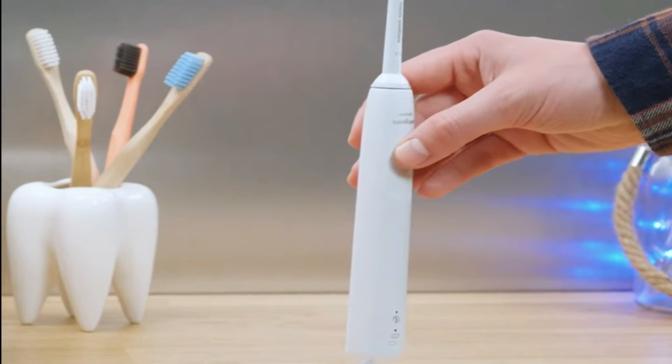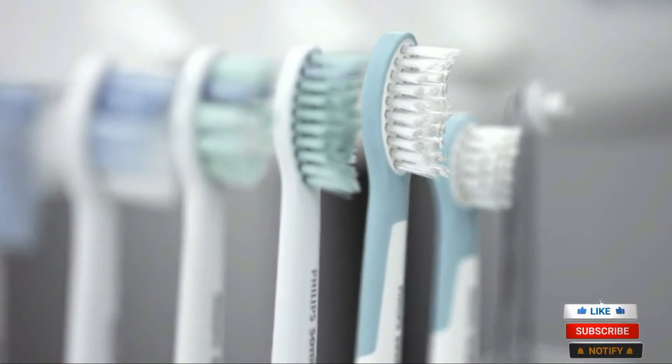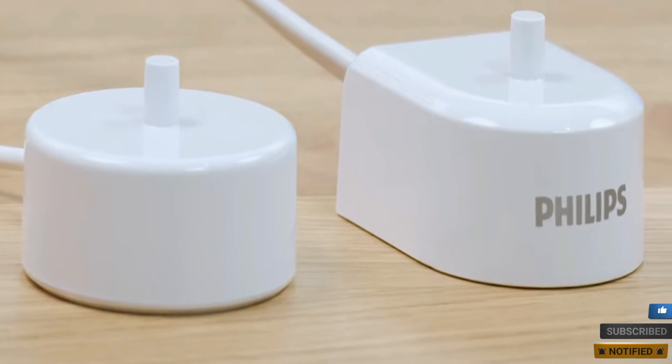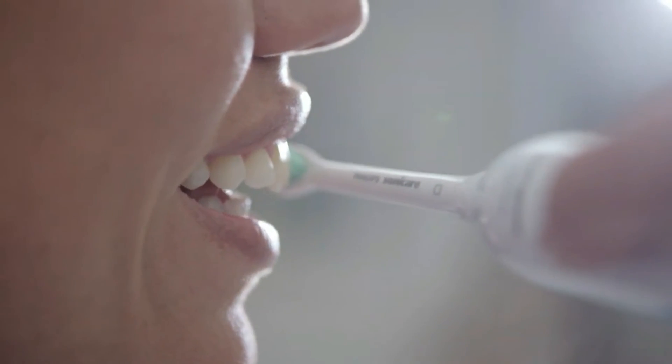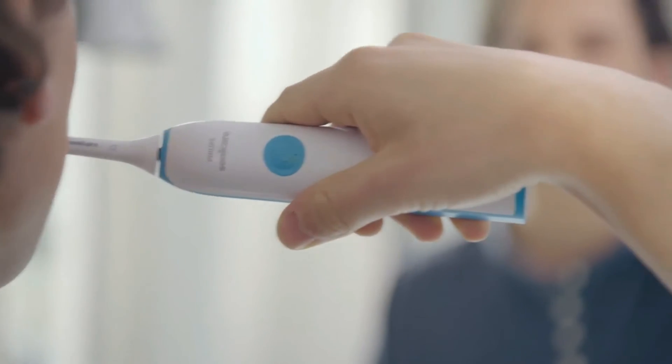There is one Philips Sonicare 4100 electric toothbrush, one optimal plaque control brush head, and one USB charger in the box. It is extremely simple and quick to use, while still providing outstanding cleaning performance for a side-to-side toothbrush that is not too forceful for individuals with sensitive gums.